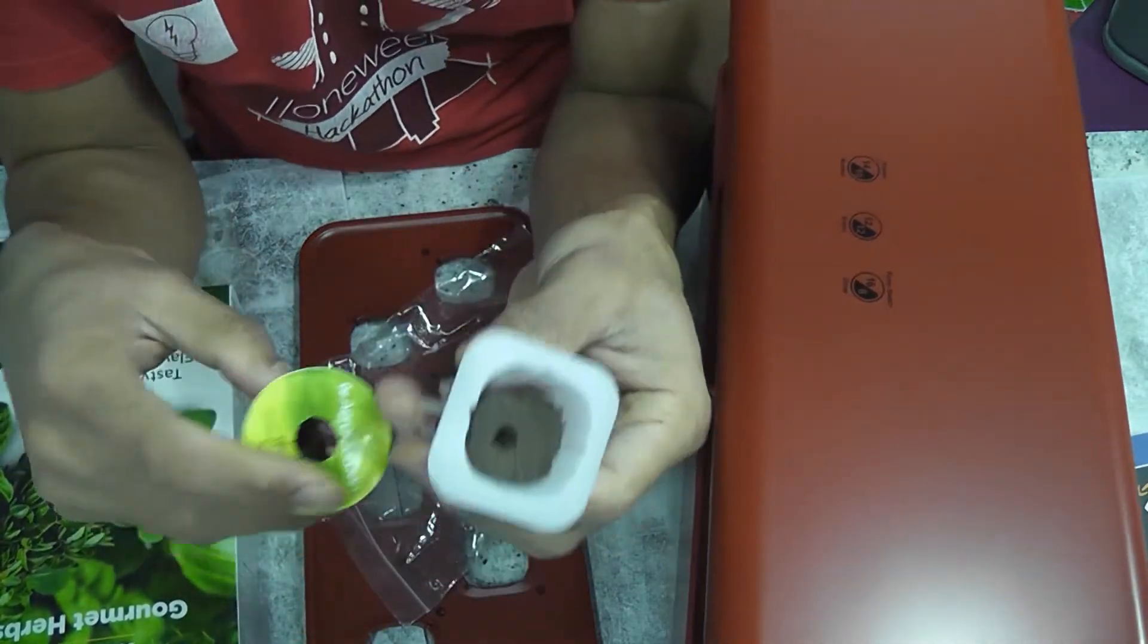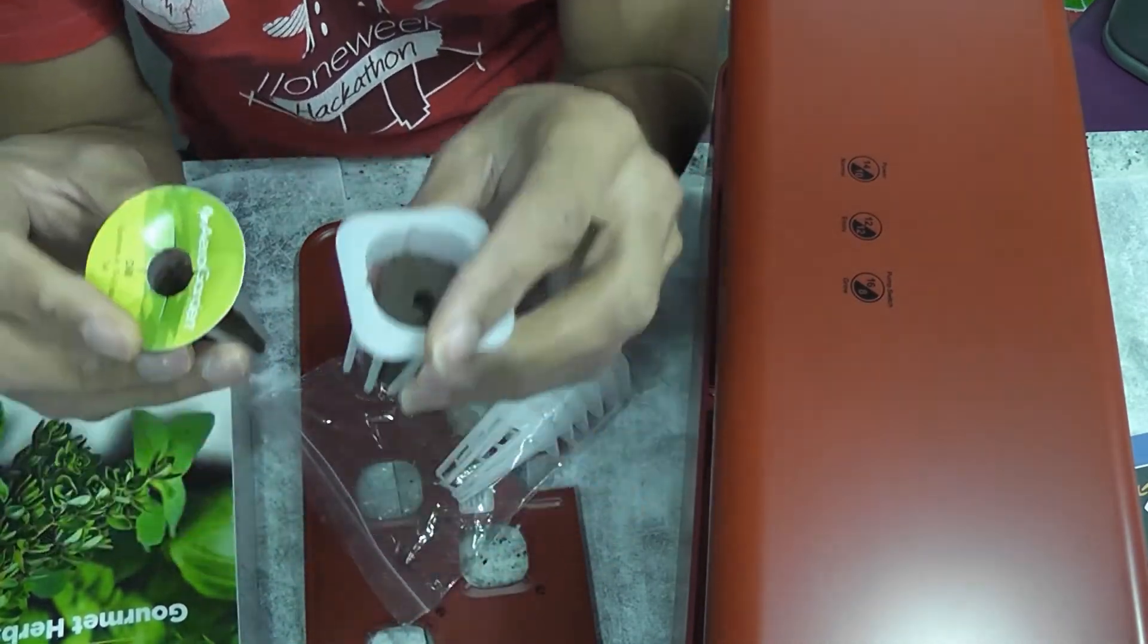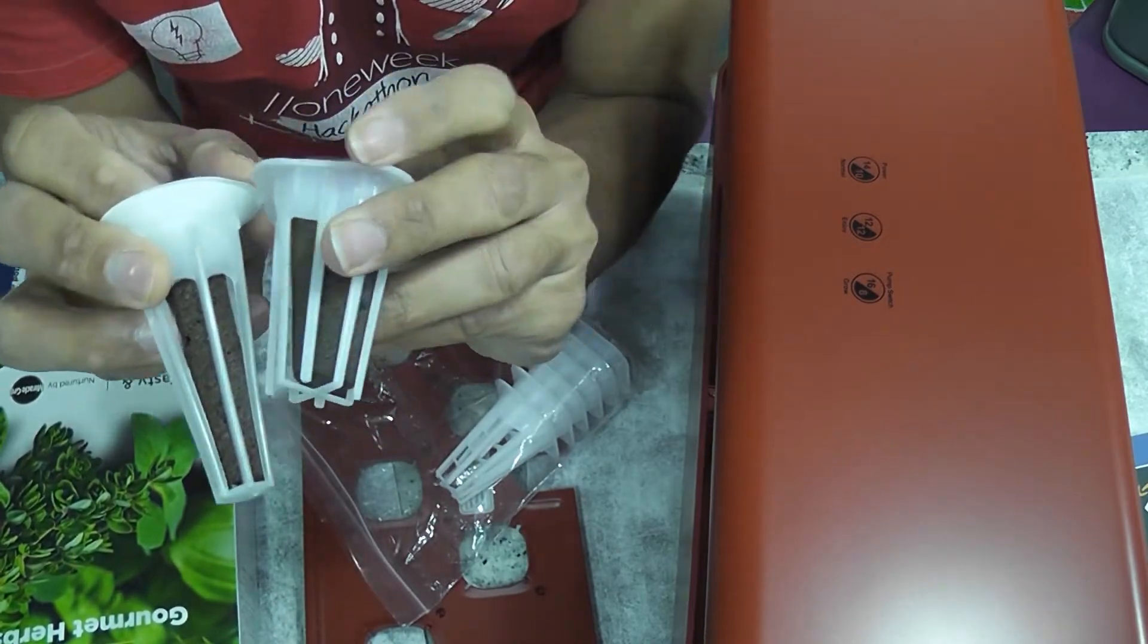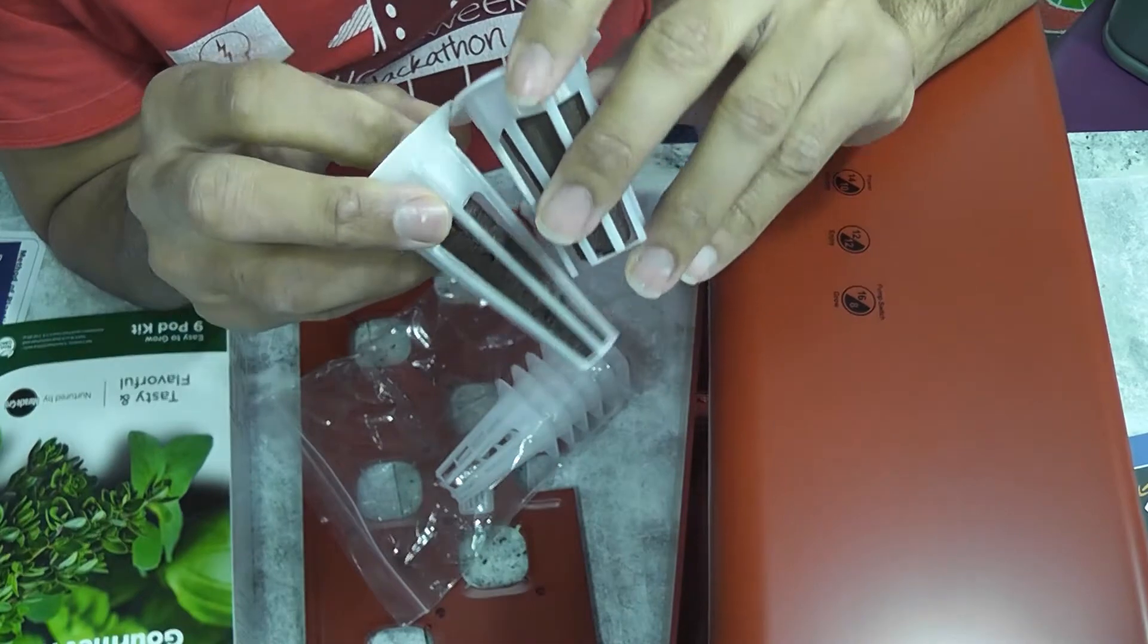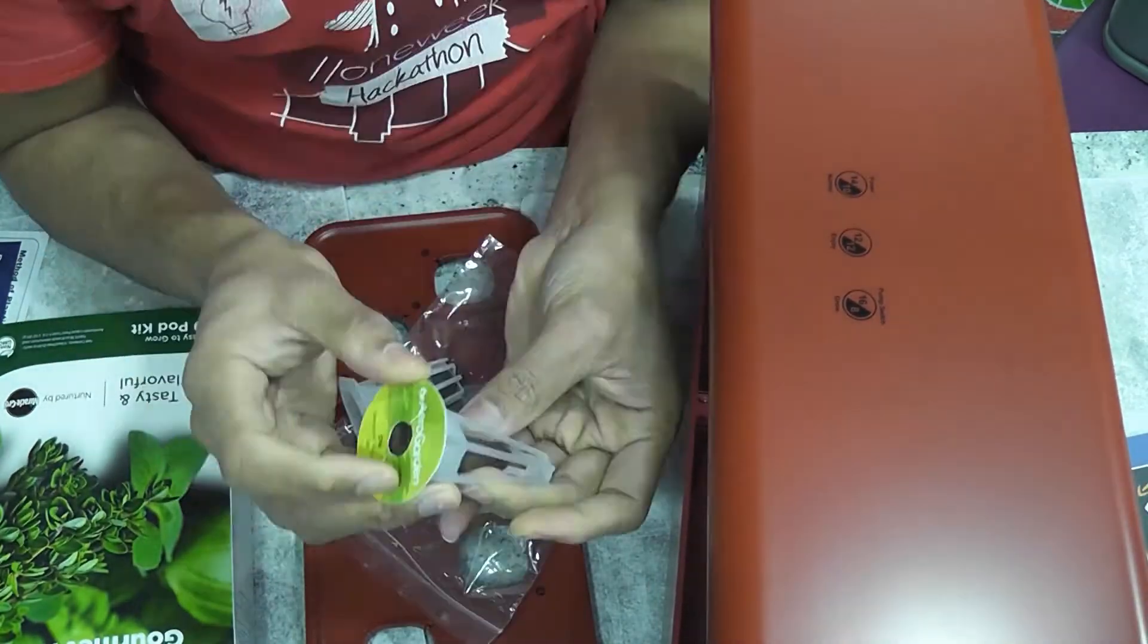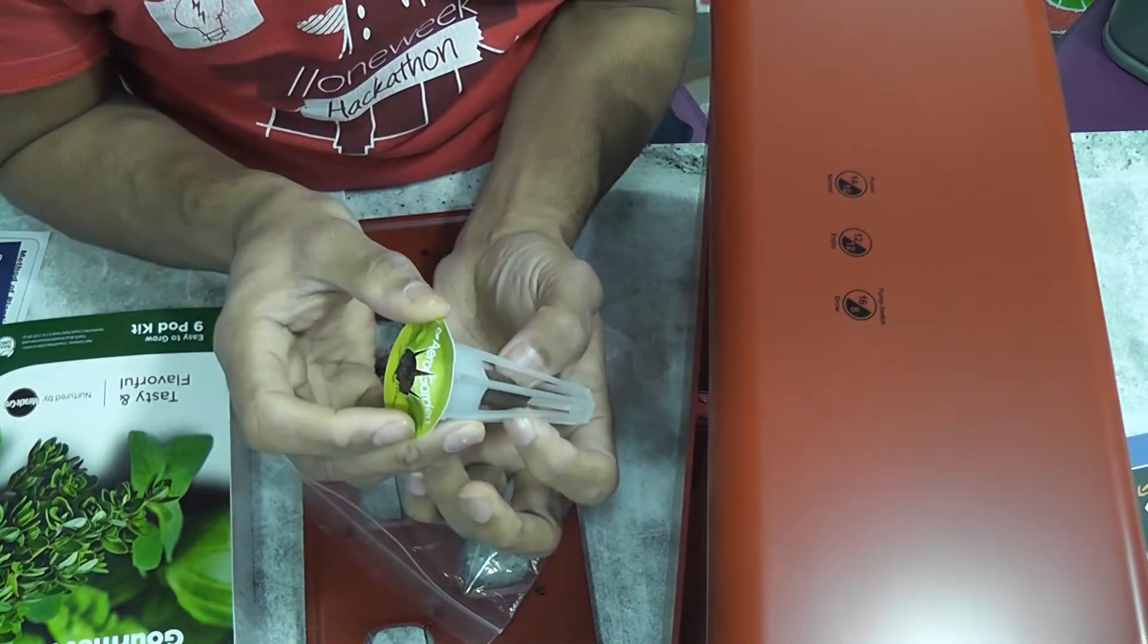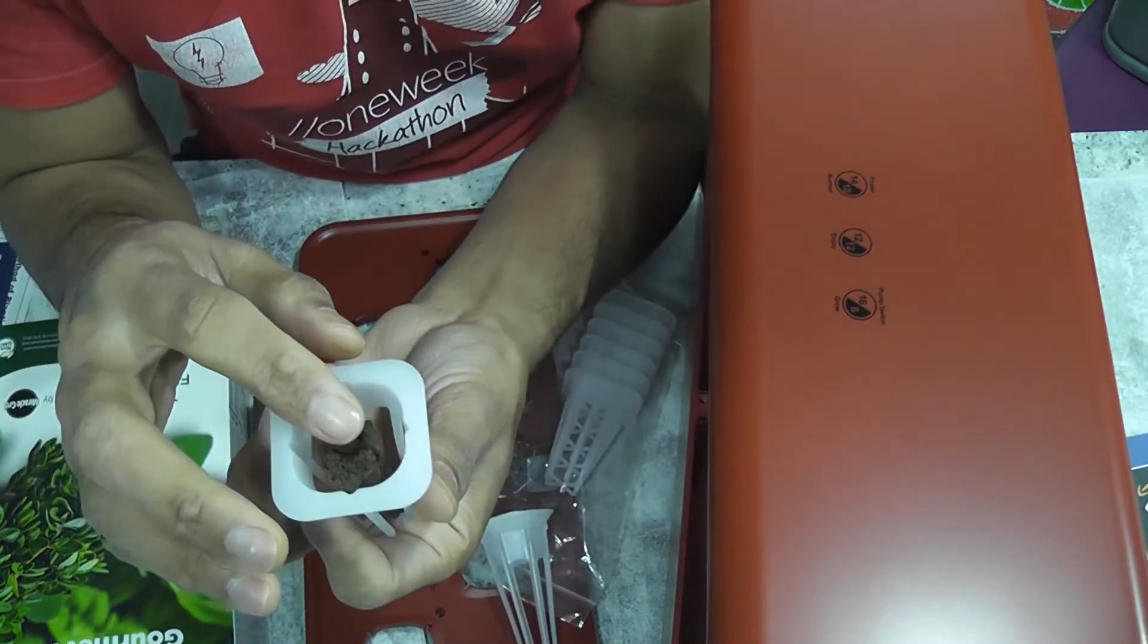A little comparison with AeroGarden pod. iDo pods and AeroGarden pods are not compatible. iDo baskets and sponges are short. iDo sponges are wide and can't fit in AeroGarden basket. You can probably cut AeroGarden sponge a bit and make it work with iDo, but it can't be perfect.